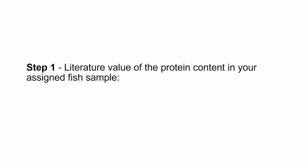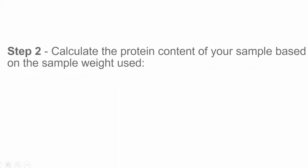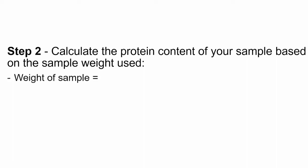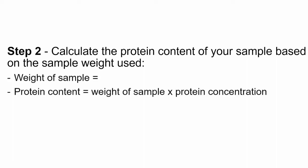In this example, the fish was determined to have 20 grams of protein per 100 grams. Next, you will need to calculate the protein content of your sample based on the sample weight provided. The protein content is calculated by multiplying the sample weight by the protein concentration of the fish.